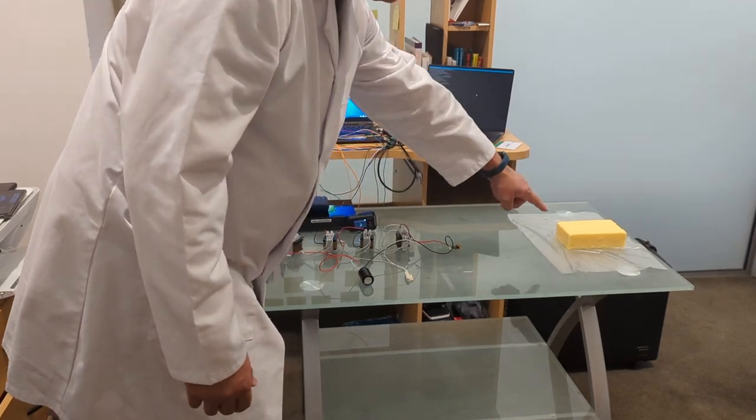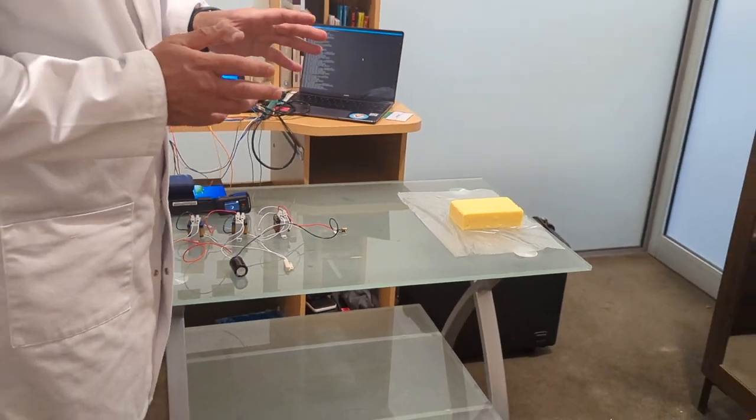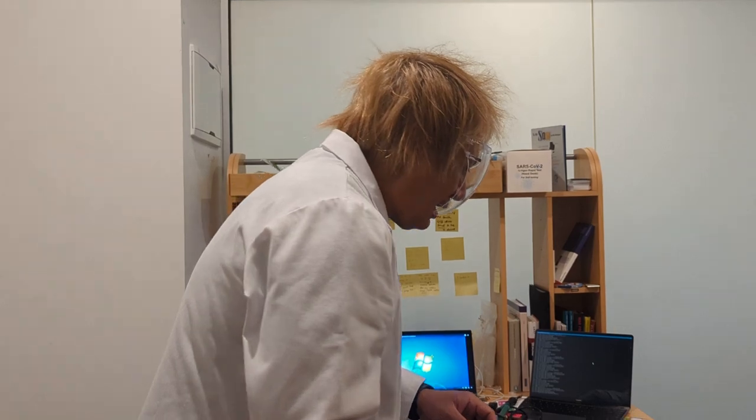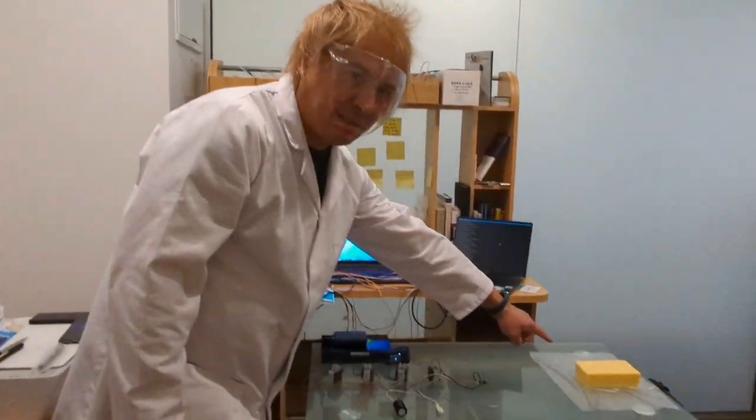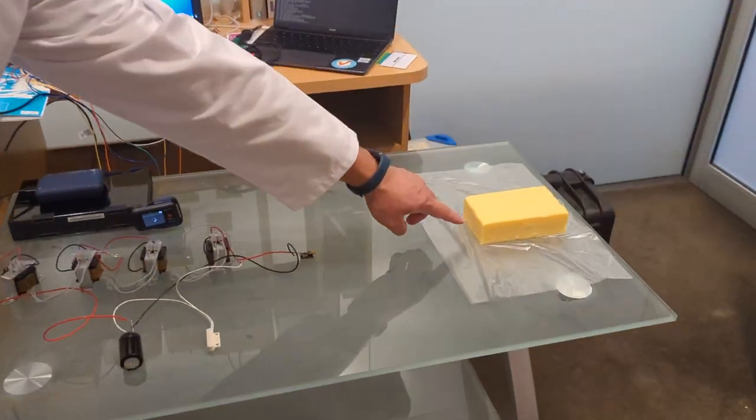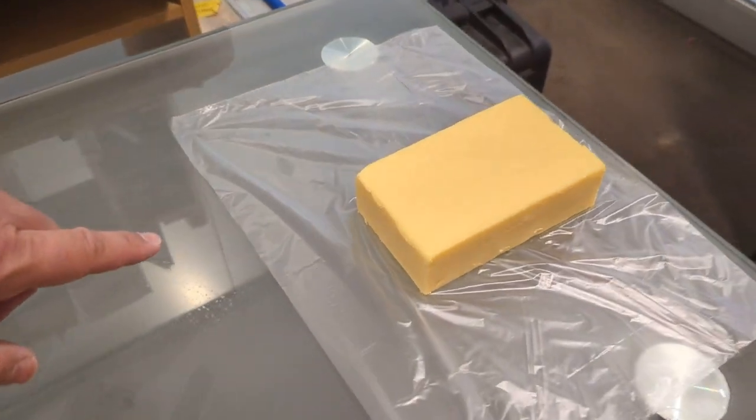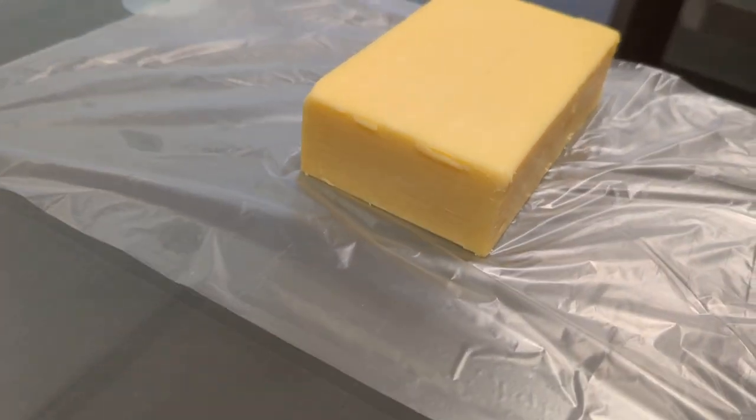We're going to demonstrate it on the piece of cheese because cheese is a good simulation of human muscles. If we look at the cheese now, you can see this is a brand new block of cheese. So we don't have any damage to the cheese.